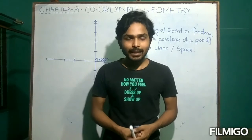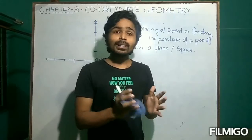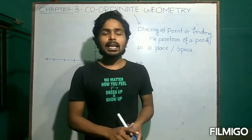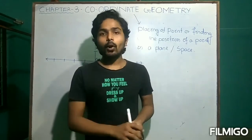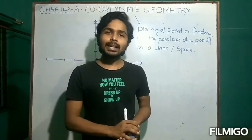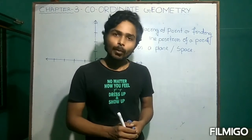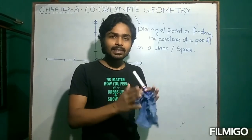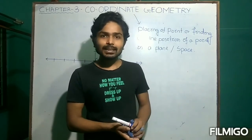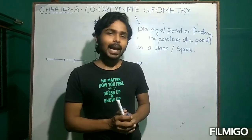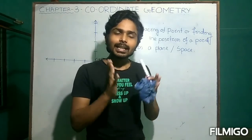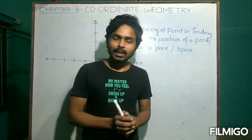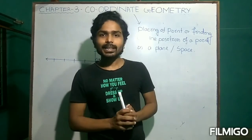Hello students. In the previous session we studied what coordinate geometry is. Coordinate geometry deals with placing a point, or finding out the exact position of a given point in a plane or in a space. A plane has two directions — length and breadth — so it is known as 2D, and space has three directions, so it is known as 3D.